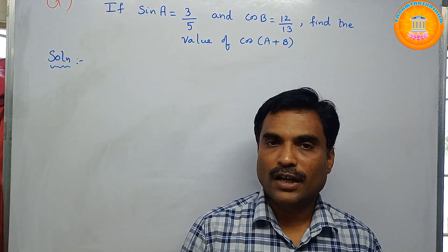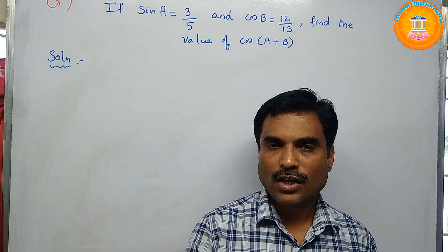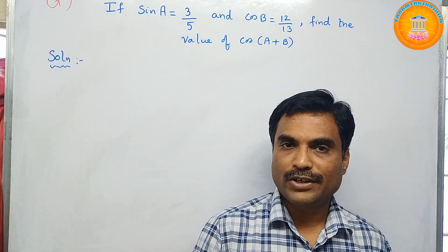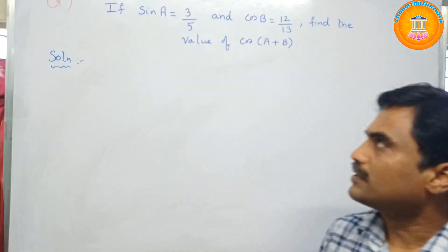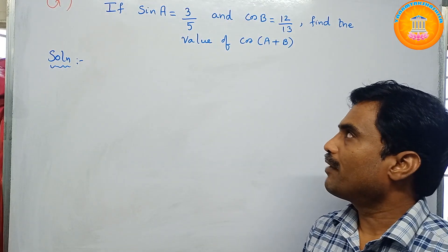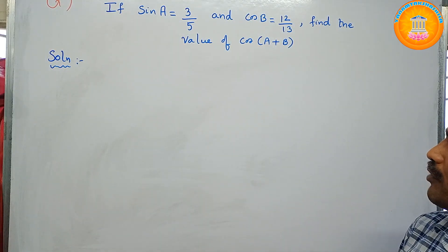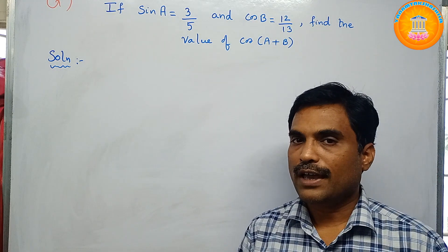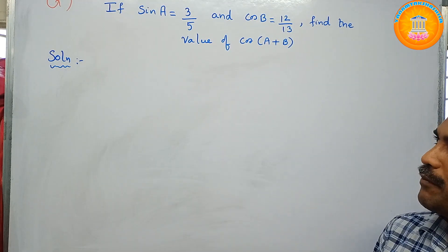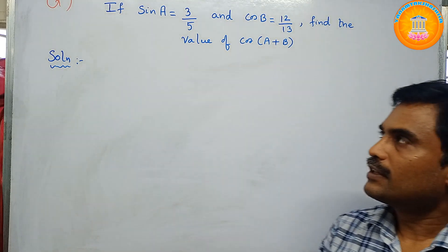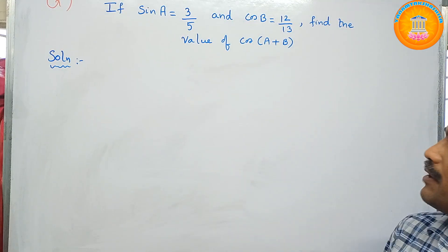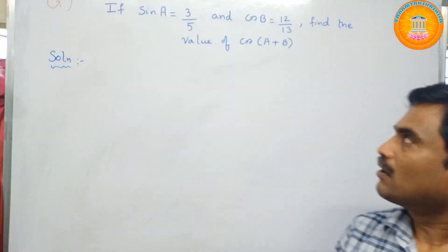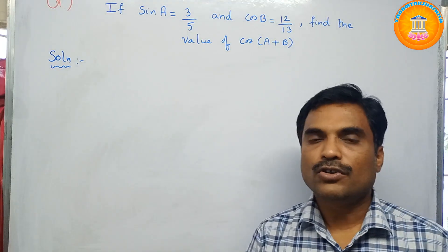Hi, welcome to my channel Yanam Takshasila. In this new video I am going to solve a mathematical problem under the topic trigonometry. The problem is: if sin a equals 3 by 5 and cos b equals 12 by 13, find the value of cos of a plus b. In this problem, sin a is given as 3 by 5 and cos b is given, so you need to find the value of cos of a plus b.